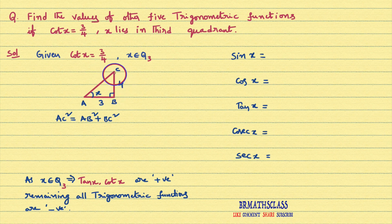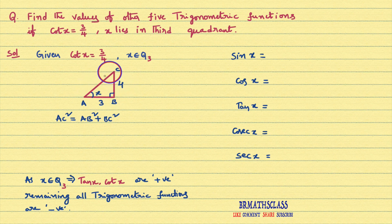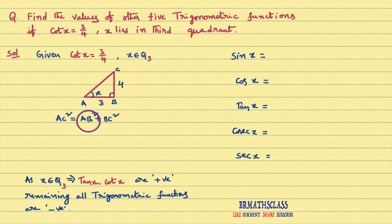Opposite to X is known as opposite side. Opposite to 90 degrees is known as hypotenuse. Cot x is adjacent side by opposite side. We need to find the third side of this right angle triangle using Pythagoras theorem.